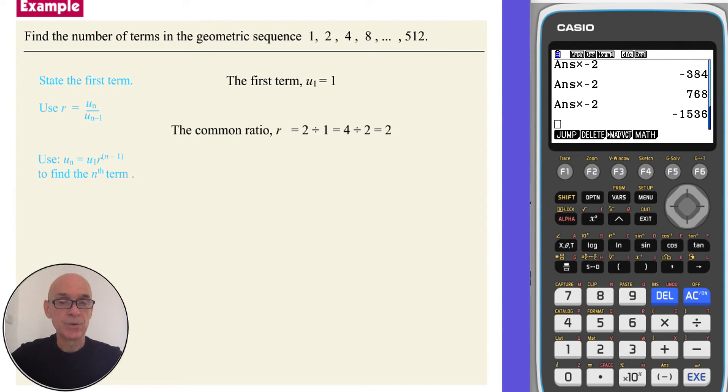Then if we use the formula for the nth term of a geometric sequence as given in your formula booklet, substituting in 1 for the first term u1 and 2 for the common ratio r. Now to find the number of terms in the sequence, we use the fact that the last term is 512. So we equate our nth term to 512 to form an equation in n, the number of terms.